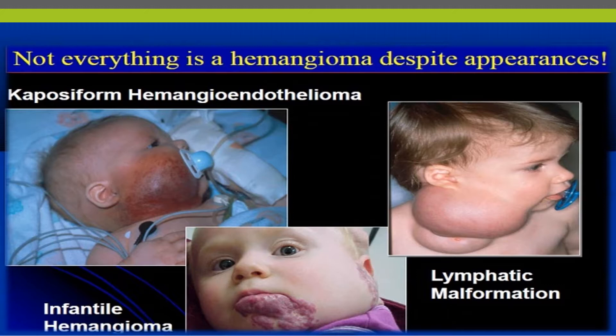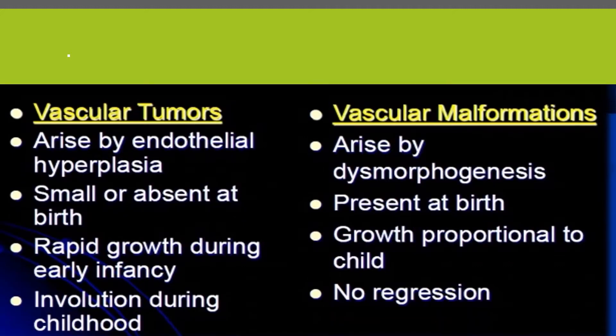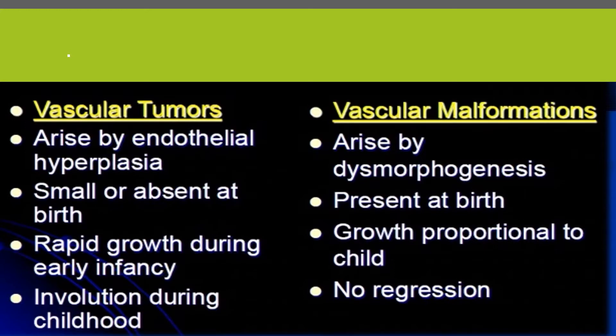The lower part is an infantile hemangioma. When we see the difference between vascular tumors and vascular malformations: vascular tumors arise by endothelial hyperplasia, whereas vascular malformations arise by dysmorphogenesis. Vascular tumors are small or absent at birth with rapid growth during infancy, whereas vascular malformations are present at birth, grow proportionally to the child, and have no chance of regression.